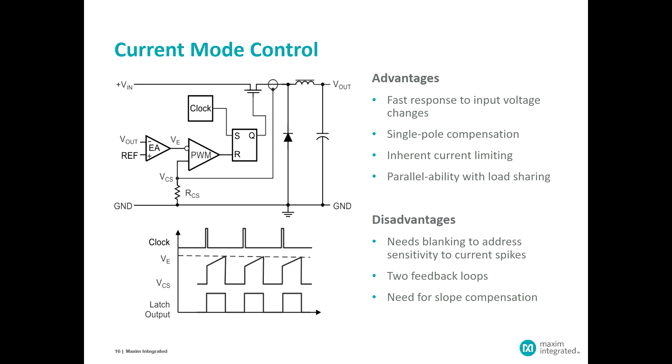So the single pole of the output filter makes the whole loop compensation problem a lot simpler, and that does allow us oftentimes to put that compensation circuit completely integrated into the control circuit. Some of the other advantages are that we have inherent current limiting because all we have to do is clamp the maximum voltage that the output of the error amp can be, and as soon as the current signal reaches that level, that automatically terminates the pulse. So current limiting can be inherent on a pulse-by-pulse basis, making the overall implementation of the power supply a lot simpler.